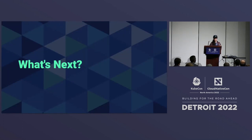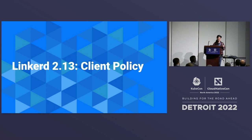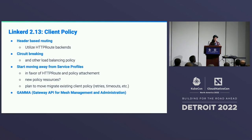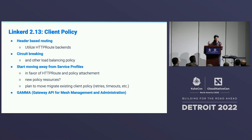So what's coming up next? Linkerd 2.13 will be our next release — when it's ready. The major focus for 2.13 is going to be client-side policy. In 2.11 and 2.12, the major focus was server-side policy — specifically admission policy, deciding what to let in or deny based on identity. For 2.13, we really want to focus on client-side policy. It's a very broad topic, but specifically we want to focus on header-based routing and circuit breaking in particular — two features that have been highly, highly requested. It's the natural time to take what we learned doing server policy and move that over to the client side.